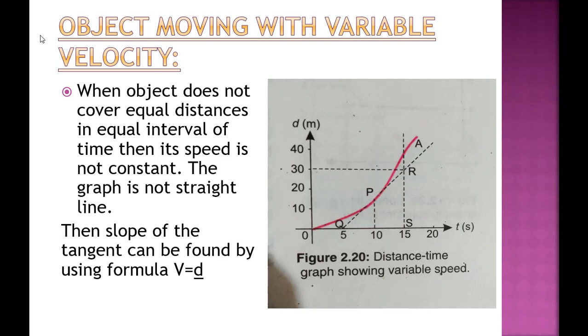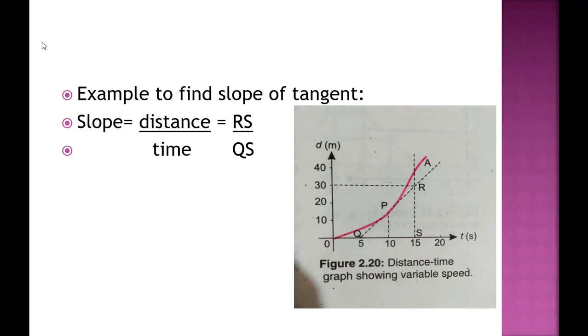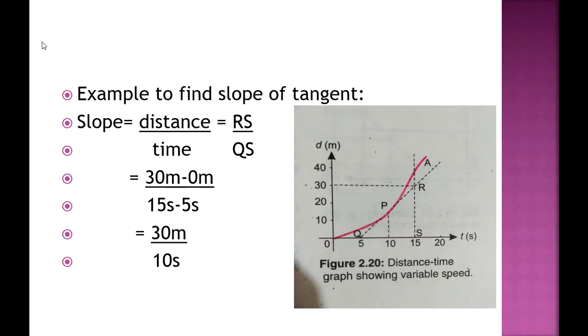When the object does not cover equal distances in equal intervals of time, its speed is not constant and the graph is not a straight line. The slope of the tangent can be found using the formula v is equal to d divided by t. For example, to find the slope of the tangent: slope equals distance RS divided by time QS, which is 30 minus 0 divided by 15 minus 5, giving 30 divided by 10. The slope of the tangent at point P is equal to 3 meters per second — meaning the speed of the car is 3 meters per second.